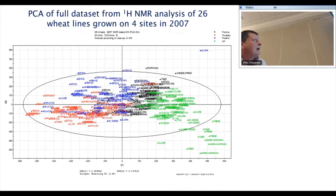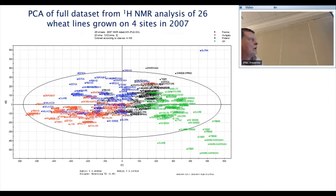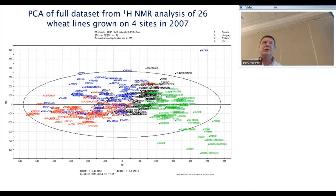We can also use the full NMR data set, treating everything as a pattern and looking at all peaks. Running three replicates across four sites in 2007 for 26 varieties, we see large environmental effects on the varieties across different sites. The replication is pretty good, but you still need to run three reps for these types of analysis. With a 600 MHz NMR, it becomes quite expensive at this stage.